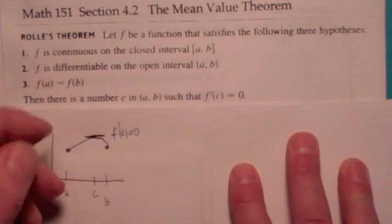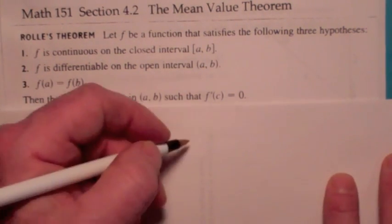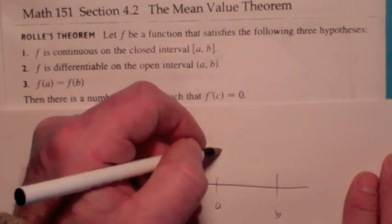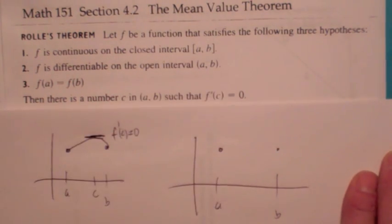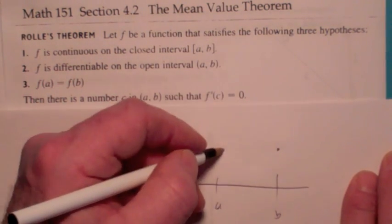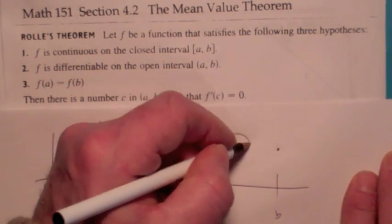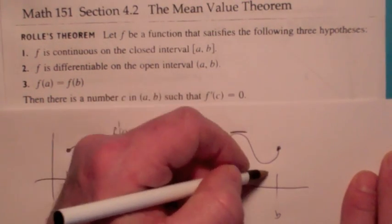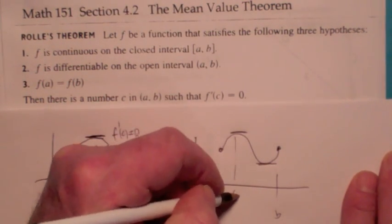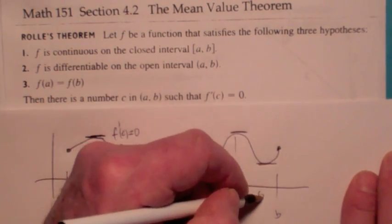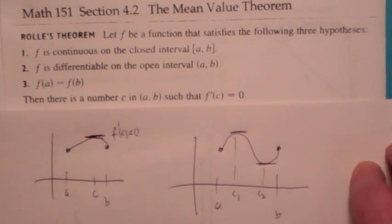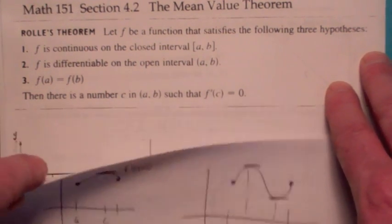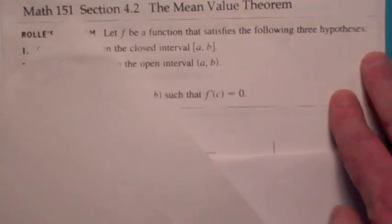That's some value c. Of course, you could have more than one. If this is a and this is b, and f(a) equals f(b), couldn't you draw the graph so there's more than one place where the tangent line is horizontal? There could be a c1 and a c2. So Rolle's Theorem says there has to be at least one. Let's look at three cases.